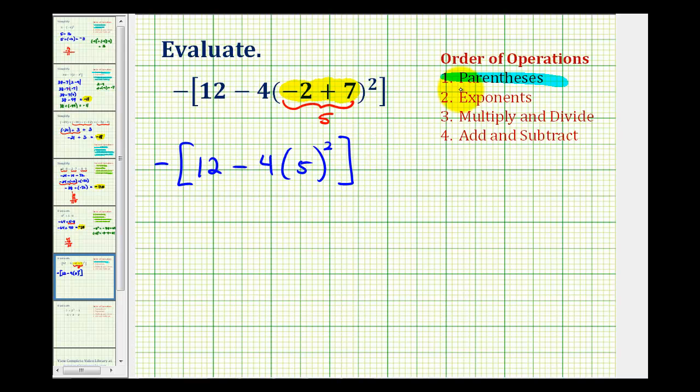The next step is to simplify the exponents. So now we'll have to square positive 5. Well positive 5 squared is 5 times 5. So this simplifies to 25.